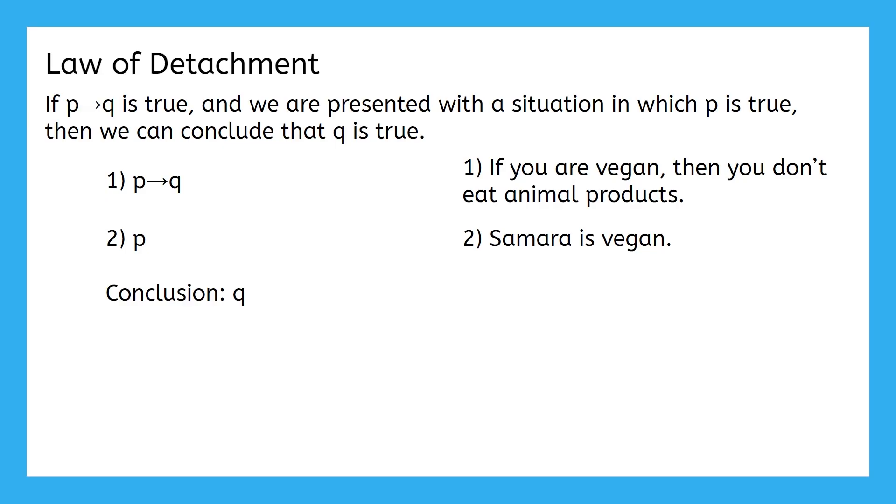Well, if she's vegan, what do you think we can conclude about her? Yeah, since she's a vegan and vegans don't eat animal products, then Samara doesn't eat animal products. Keep in mind that this law only applies if we have P implies Q and P.